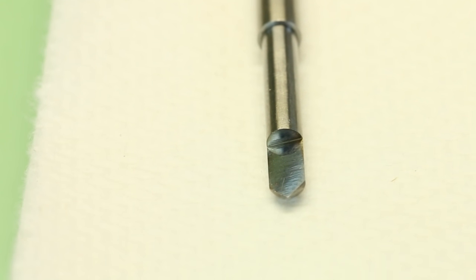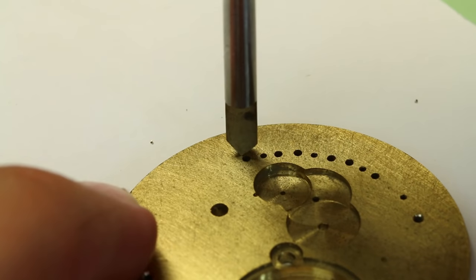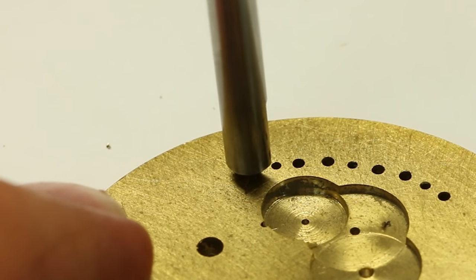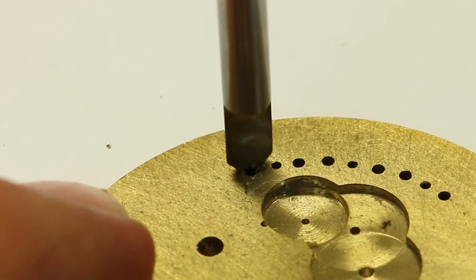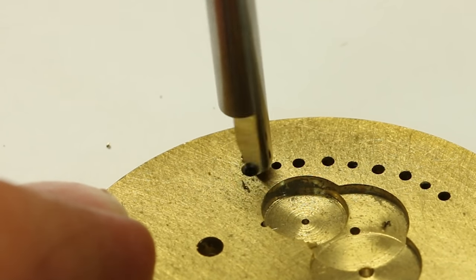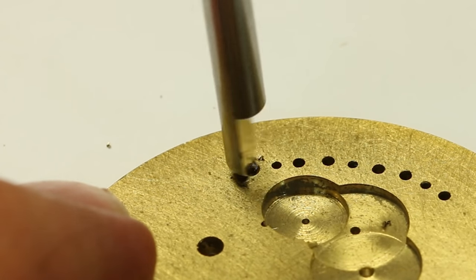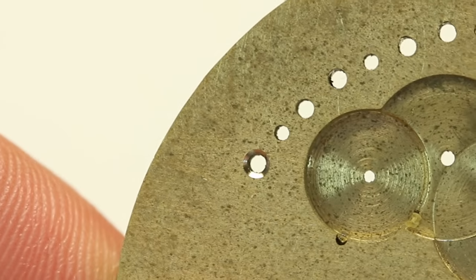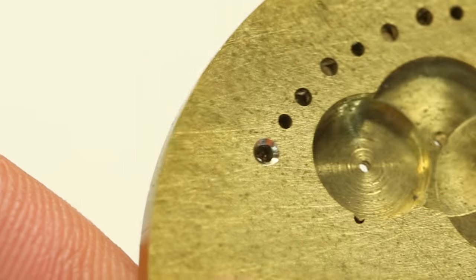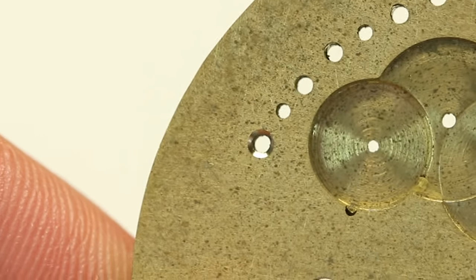So here the tool is finished and now I'm going to test it by countersinking a hole in one of my scrap experimental brass pieces. As you can see, it cuts really nice, it leaves a bright finish on the taper. It doesn't leave any scoring lines or chatter marks.